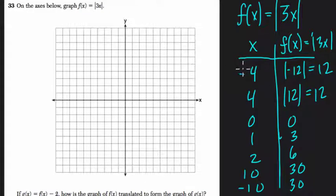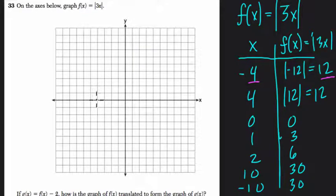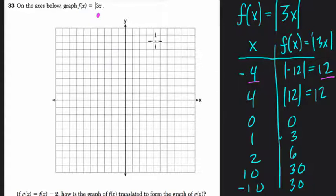What we just did was create all the points for this graph. The first point: negative four input, output twelve — go left four and up twelve. Oh, we ran out of room, so we might not use that officially, but it's there. Four comma twelve is also there at the same height. If this happens, definitely label your points.